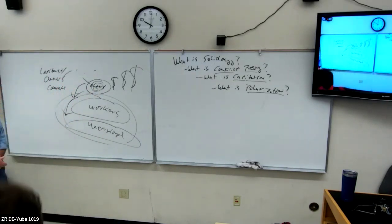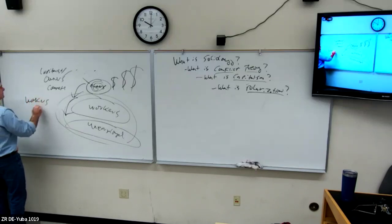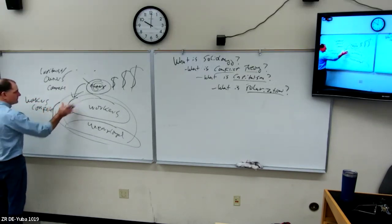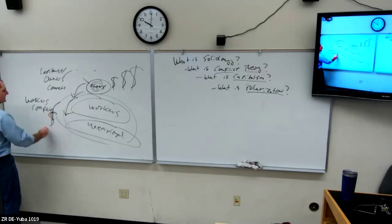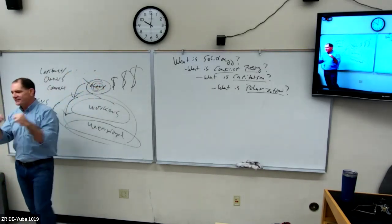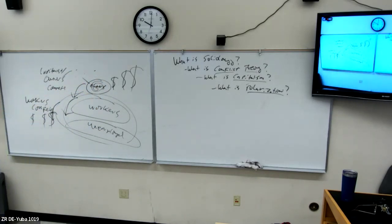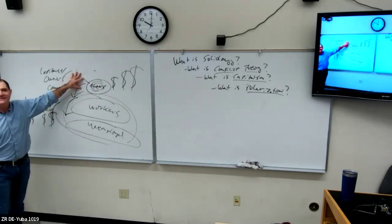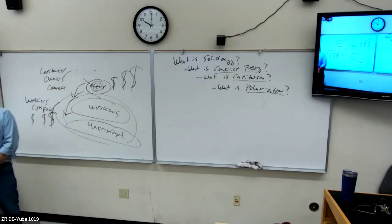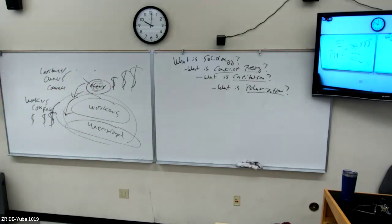Meanwhile, working people are competing too — to see who can get a job. They're willing to undercut each other: 'I'll work for less than that one.' So their share of the pie goes down, and as their share goes down, the owners' share goes up. That's the conflict — that's why it's called conflict theory. The interests of owners and workers are opposed to each other, which is why government is involved as a kind of referee.